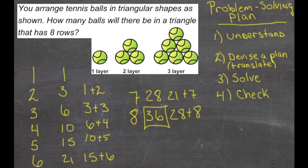So, by our calculations, we should have thirty-six balls in the eighth row. Now, if we go back and check and just make sure we had our math right, one plus two is three,